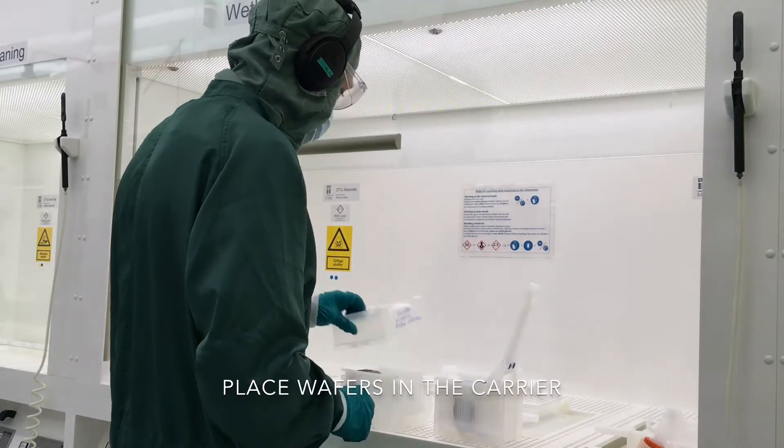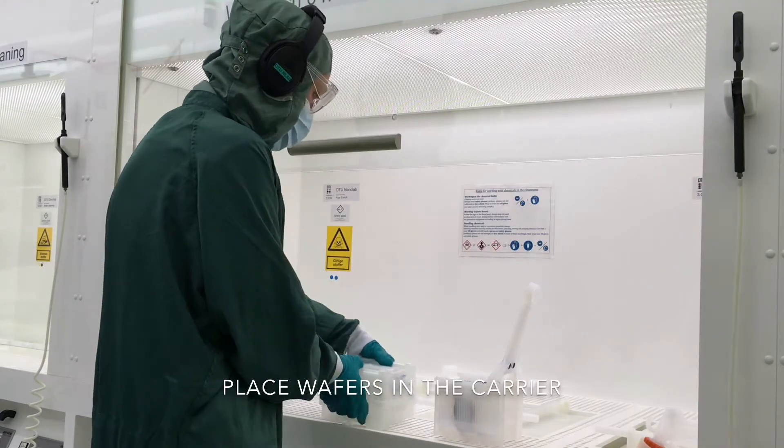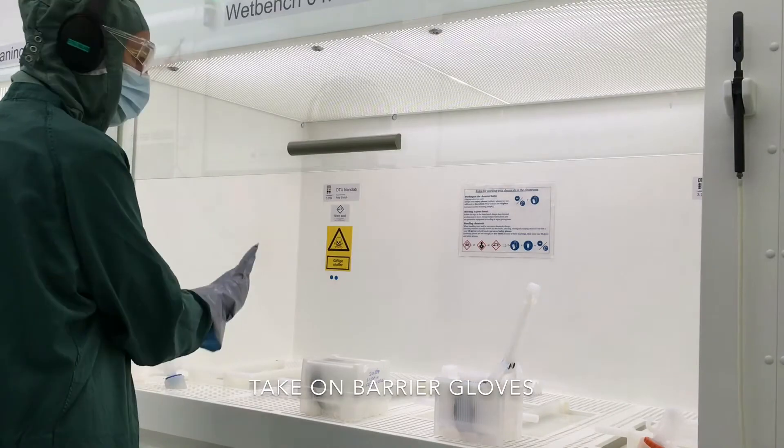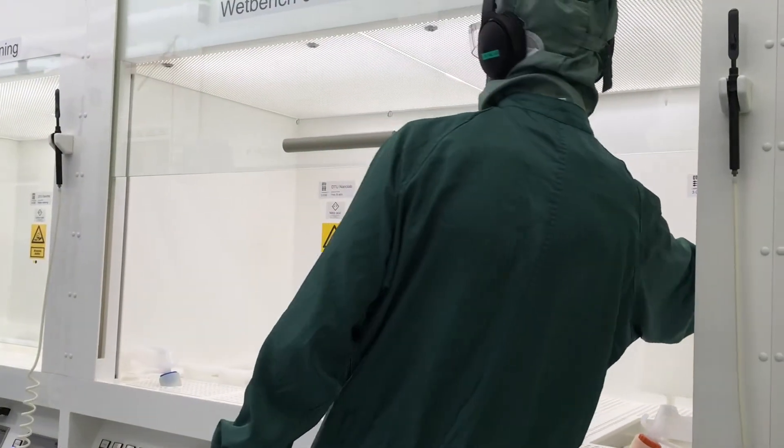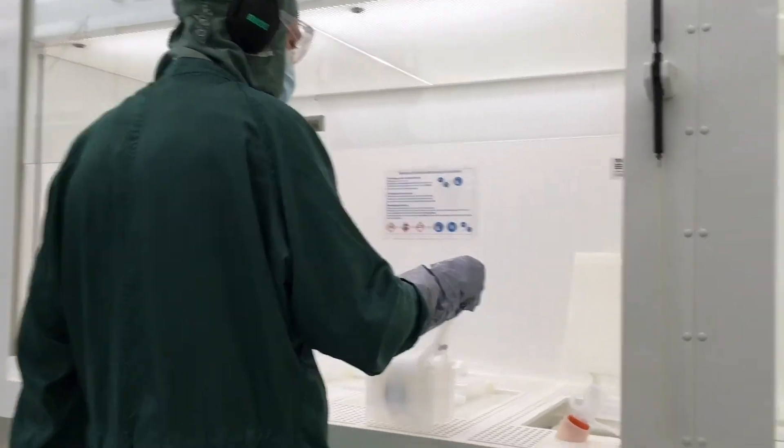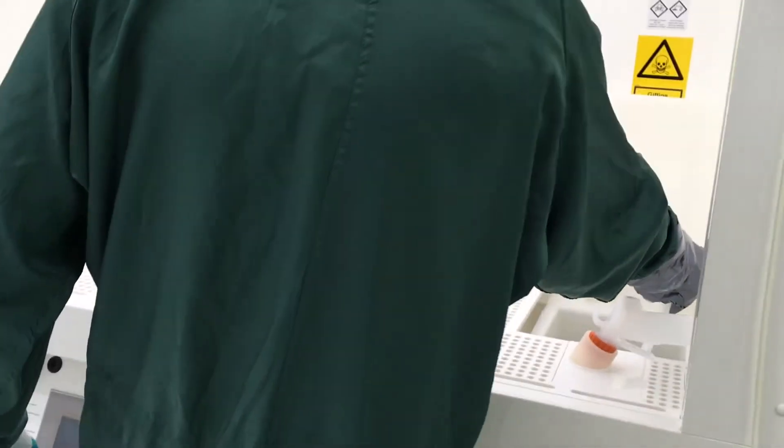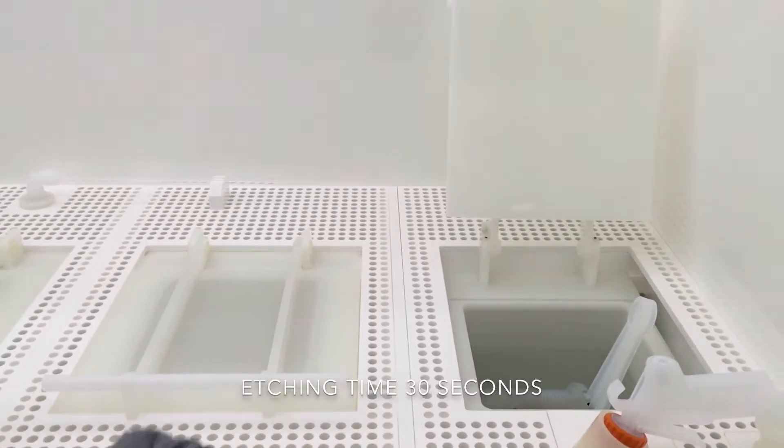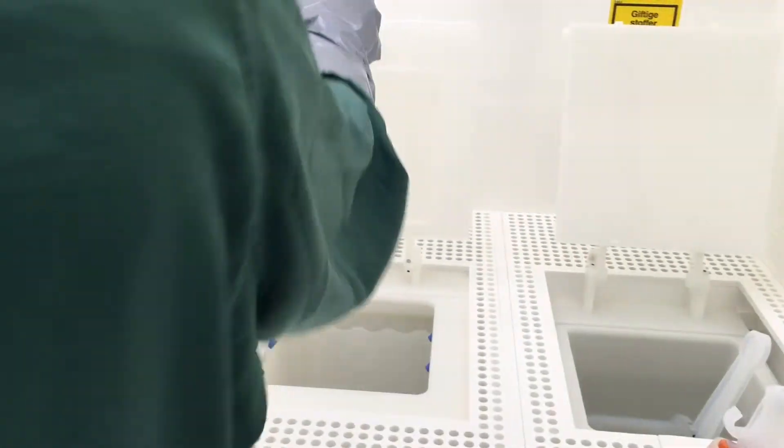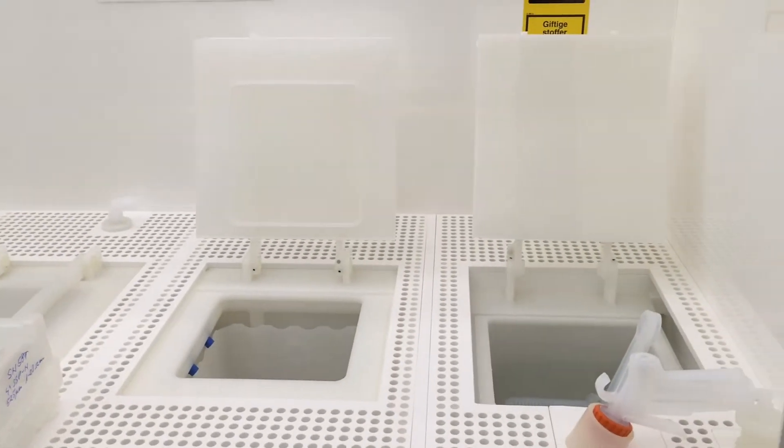Open the hydrochloric acid bath and place the wafers out there. This will then etch away the silicon oxide on the wafers. This takes roughly less than 30 seconds.